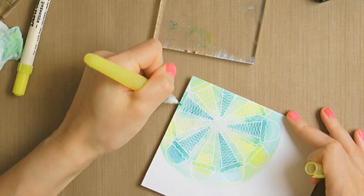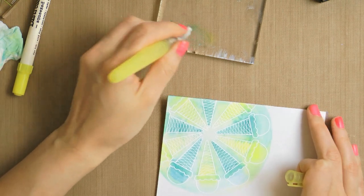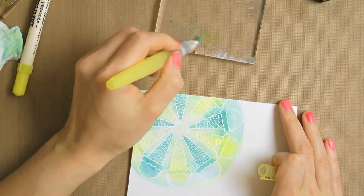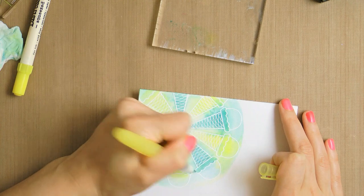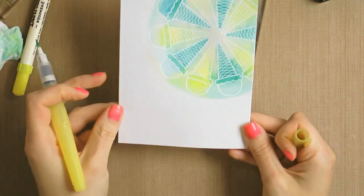I like using clear blocks when working with distress markers as it gives me more control over how much color I'm applying to my images. Because I didn't like how my ferris wheel turned out, I simply cut out a few ice cream cones out of that paper and decided to use them separately.